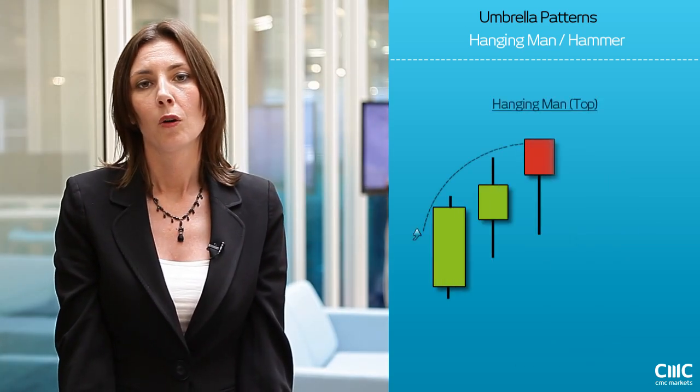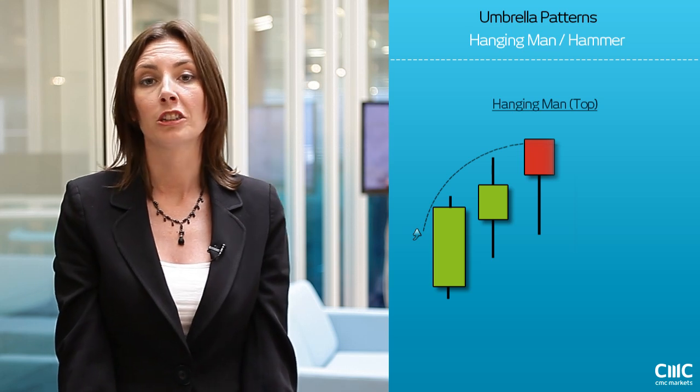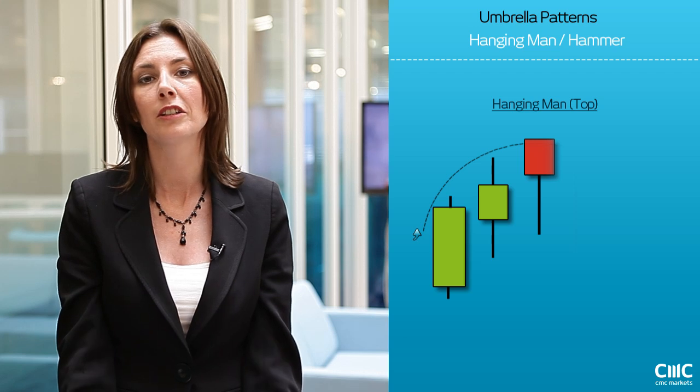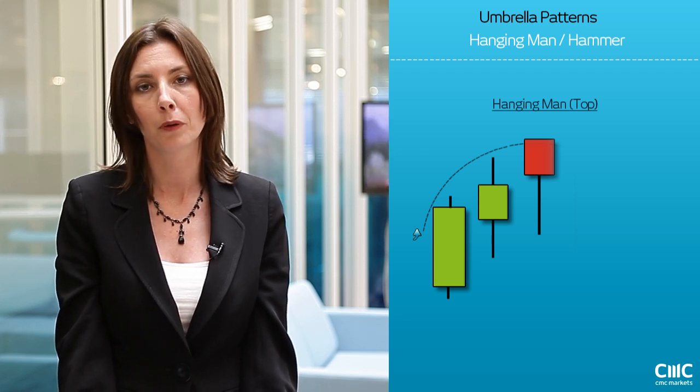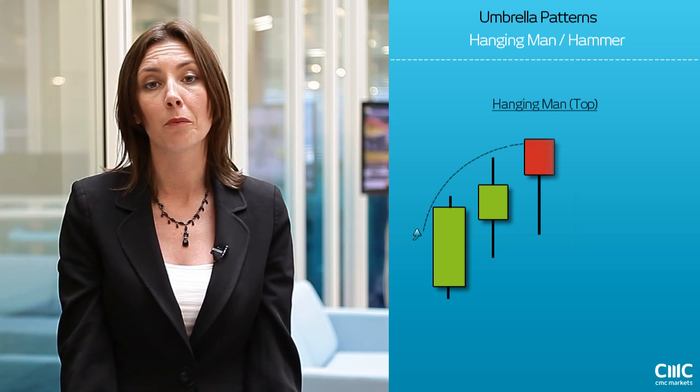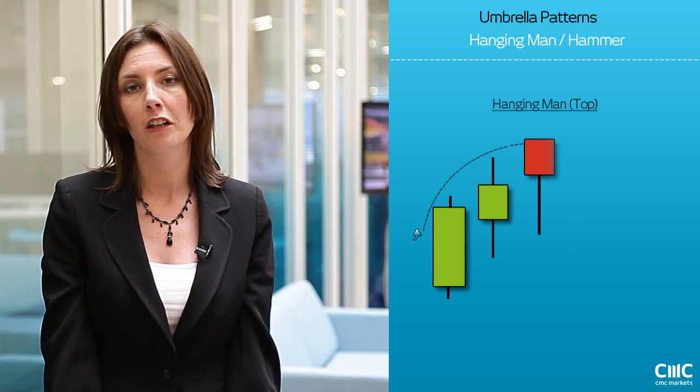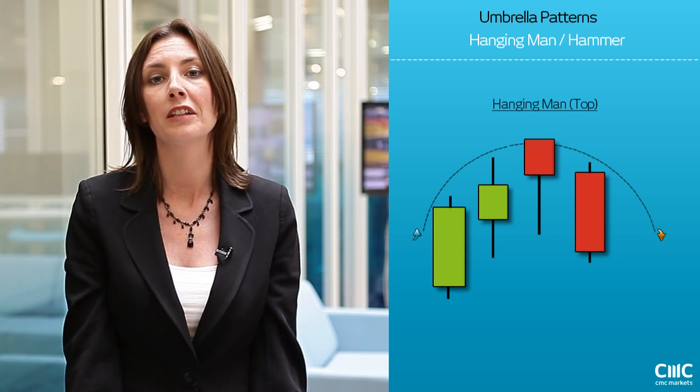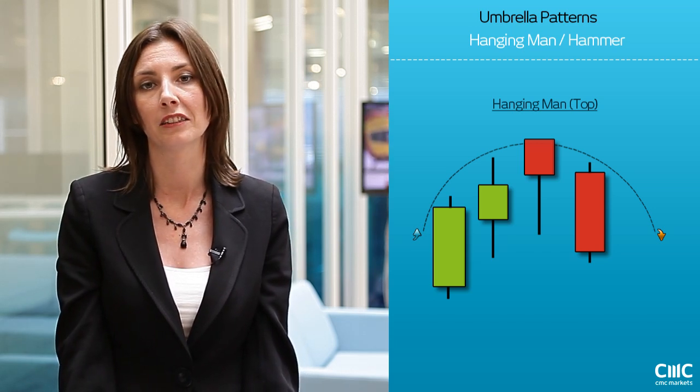The hanging man often appears at the top of an uptrend. What you can often see is a very long shadow where there has been additional selling pressure, where it's aggressively targeting the downside but has been pushed higher by the bulls. Again, the color of this candle does not make much difference. What you'll be looking for is the next candlestick, which will give you an indication as to whether this reversal is about to take place.